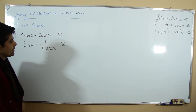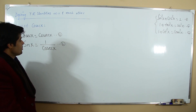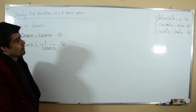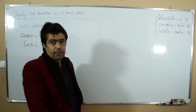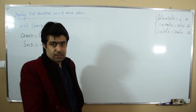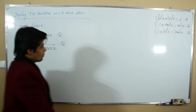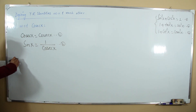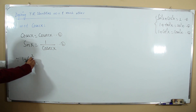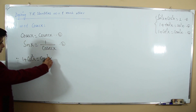Sine is the reciprocal of cosecant: sin x = 1/csc x. This is our second relation. Use the third identity: 1 + cot²x = csc²x.